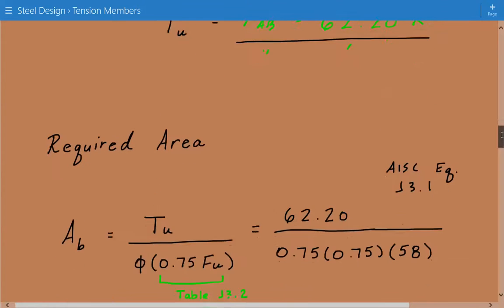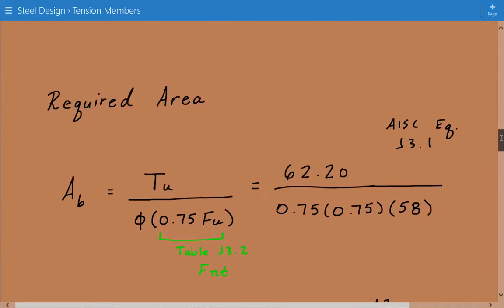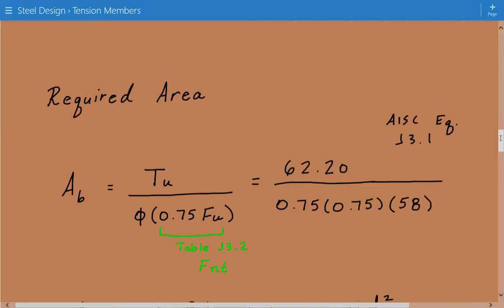Now we're going to calculate the required area per AISC equation J3.1. And it's going to be equal to the design tensile design load divided by the resistance factor, and then times FNT. And FNT, which is a nominal tensile stress, is equal to 0.75 times the ultimate tensile strength per AISC table J3.2 in the 13th edition.